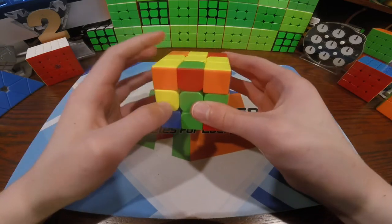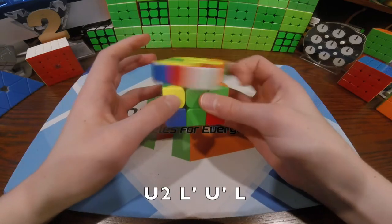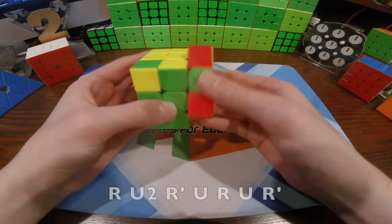And then here, I saw this pair and this corner. So I did a U2, then inserted that, and I have this pair.